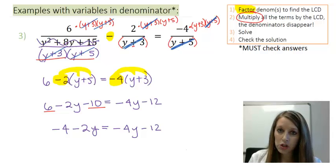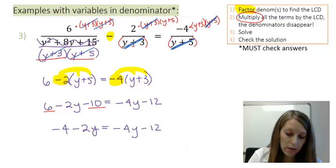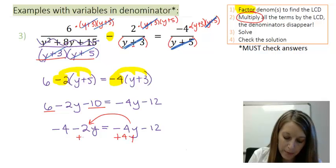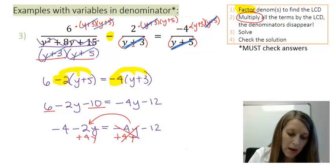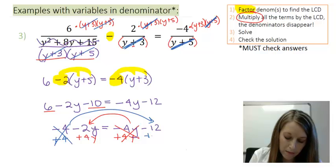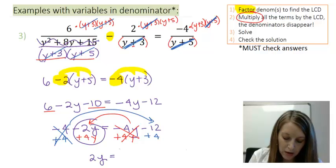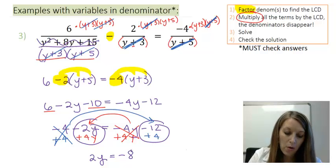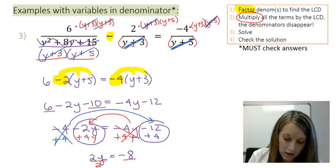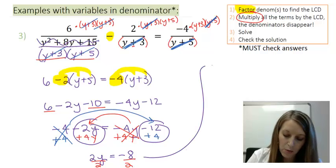Now I need to rearrange to put all my Y's on one side and all my constants on the other. I move my negative 4Y to the left by adding 4Y, and my negative 4 to the right by adding 4. That leaves me with positive 2Y equals negative 8. Dividing by 2 gives me my final answer of Y equals negative 4.